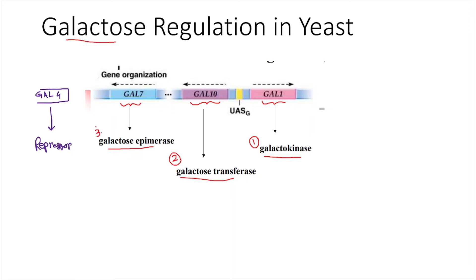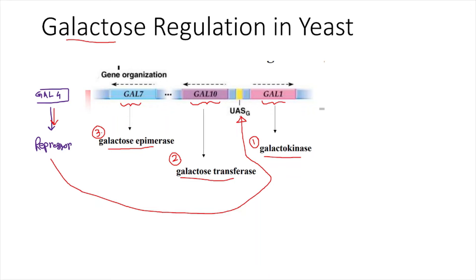Apart from these three genes, you have a gene a few base pairs upstream called the gal4 gene, which codes for the repressor protein. In absence of galactose, when galactose is not present in the media, yeast does not need to break down galactose. The repressor protein binds to a promoter region called the UASG sequence, or upstream activator sequence.